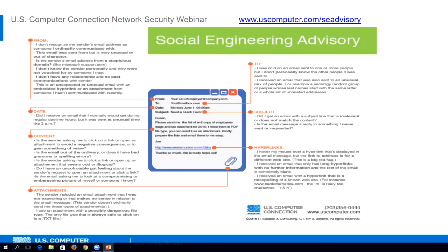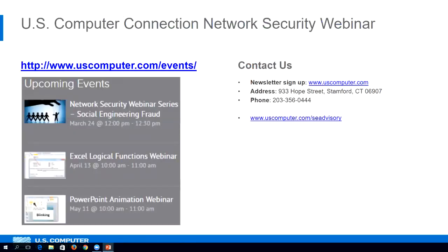We also created a document for you at www.uscomputer.com/seadvisory — a social engineering advisory that explains what to look for. We encourage you to download this document and share it with your friends, family, and all your employees at your office. This is an important document that'll help identify what to look for in an email to make sure it's legitimate. Go to www.uscomputer.com/events to see all upcoming events we have — including Excel, PowerPoint, and Microsoft Office training. We're located at 933 Hope Street in Stanford. Please call us if we can help you. Have a nice day.